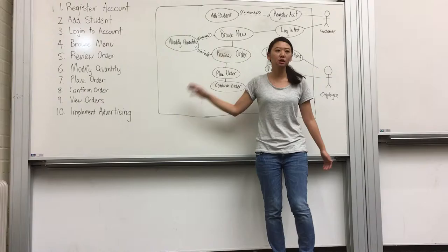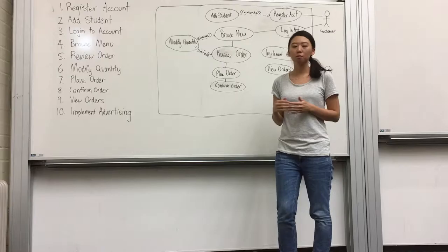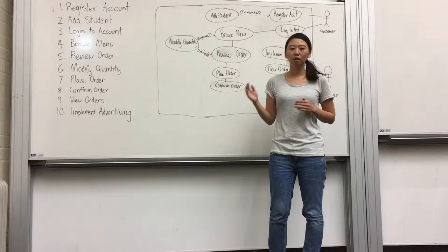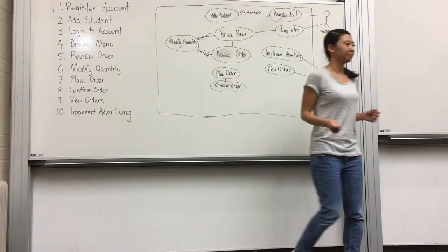I'm going to talk about modify quantity. This function allows users to modify quantity, like editing the number of items or removing items. If the user sets the number to zero, the system automatically removes the item. So this is the automatic flow and the main function.